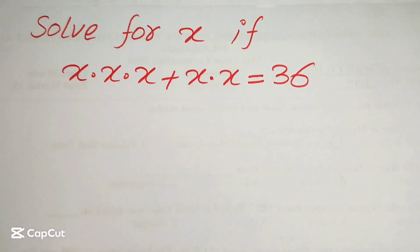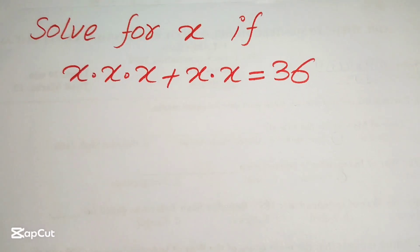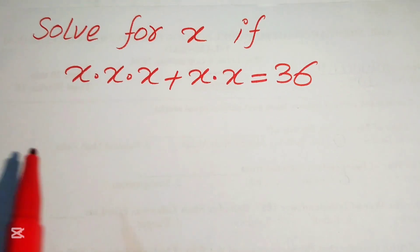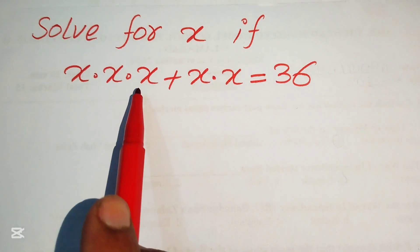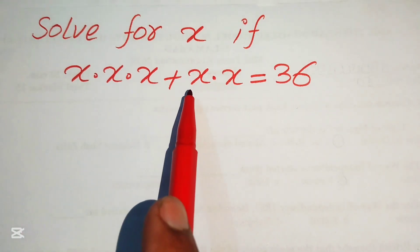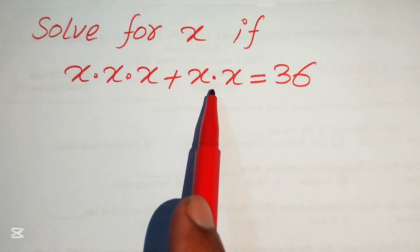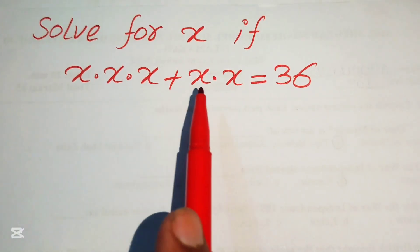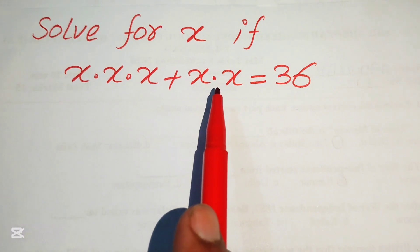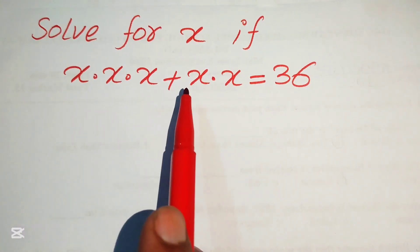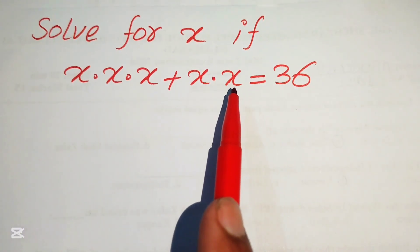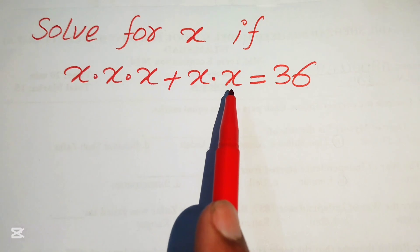Hello everyone, welcome. Let's solve this algebra problem. We have three times of x plus three times of two times of x — here x is multiplied three times and x is multiplied two times — and their sum equals 36. We need to find the value of x.